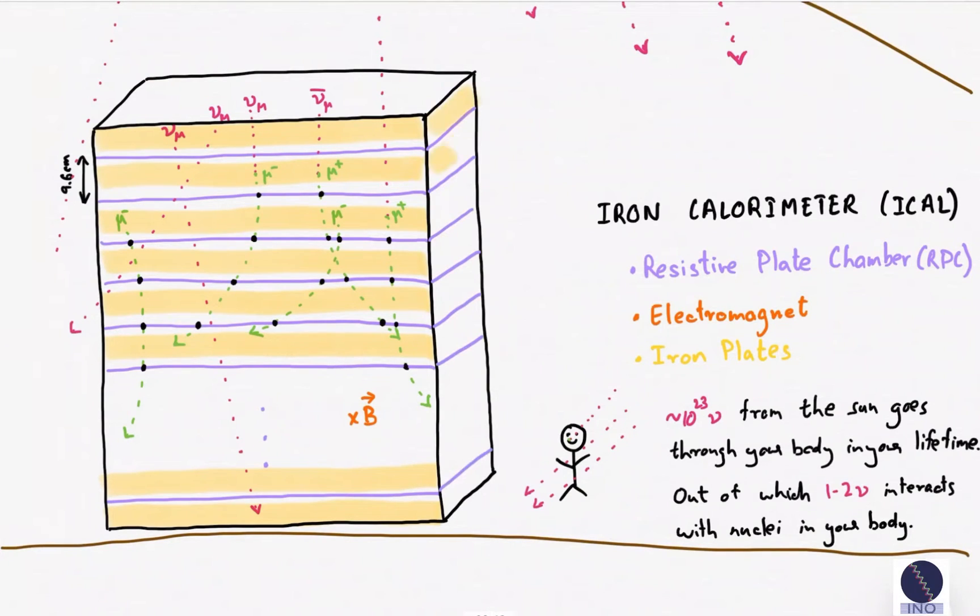ICAL will have 151 layers of iron sandwiching RPCs and will be 14.5m tall, 16m by 16m. There will be 3 such modules with a total of around 29,000 RPCs each of size 2m by 2m. The total mass of iron is 50 kilotons.